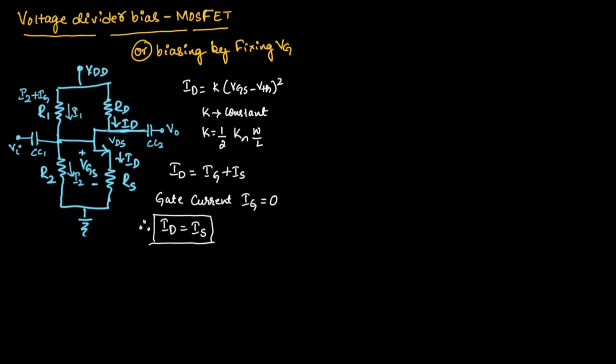Let us consider the input circuit. Let us use Thevenin's theorem to find Thevenin's voltage and Thevenin's resistance. So Thevenin's voltage can be given as, if you find Thevenin's voltage between Vg and ground, we can write it as R2 divided by R1 plus R2 into Vdd.